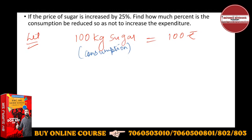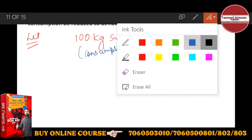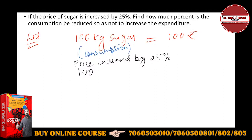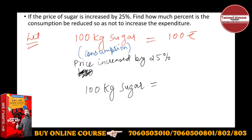Now the price of sugar is increased by 25%. So 100 rupees plus 25 gives you 125. You can directly write 125 rupees. So now 100 kg of sugar will cost 125 rupees.